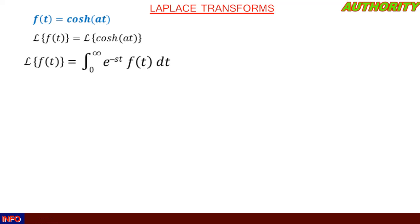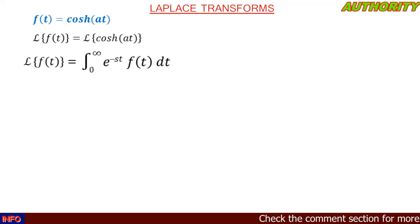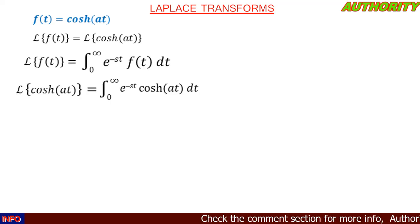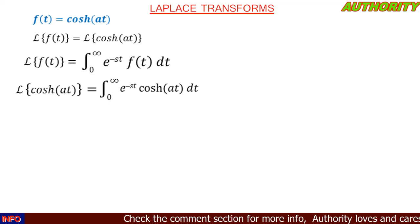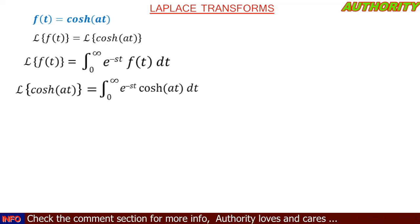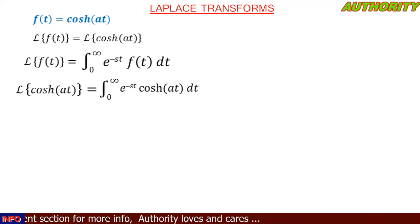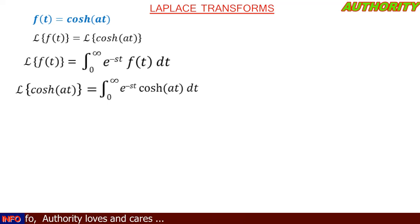Recall that by definition, the Laplace transform of f(t) is equal to the integral from zero to infinity of e raised to the power of minus st, multiplied by f(t), dt. So the Laplace transform of cosh(at) becomes the integral from zero to infinity of e^(−st) · cosh(at) dt.